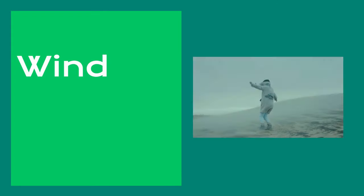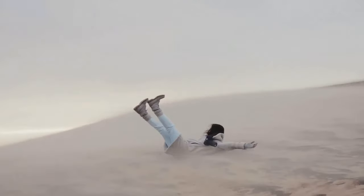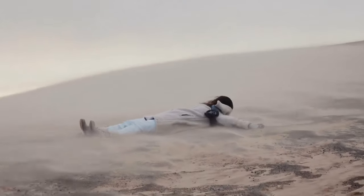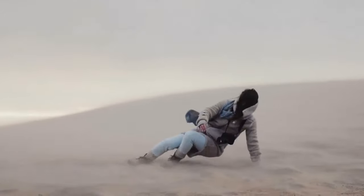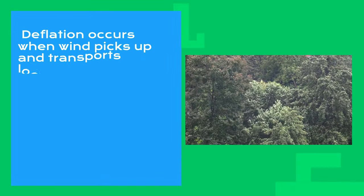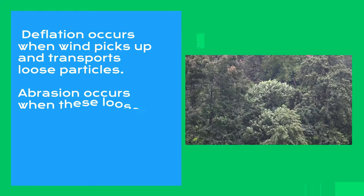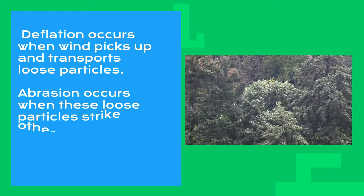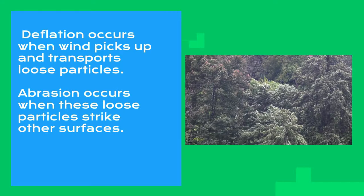Wind is also a major type of erosion. Wind erosion occurs by deflation and abrasion. Deflation occurs when the wind picks up and transports loose materials, and then abrasion occurs when these loose materials strike other surfaces.